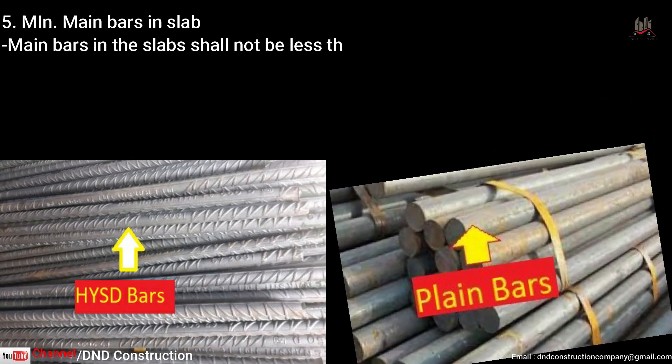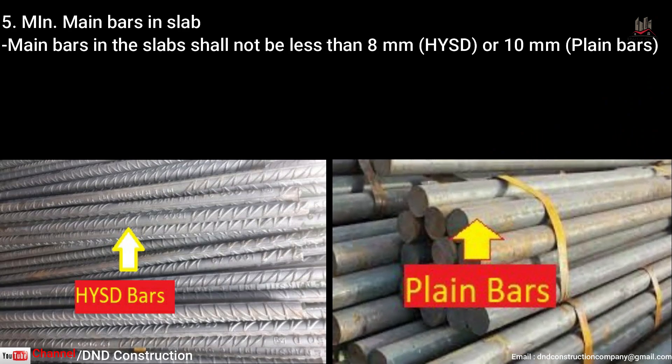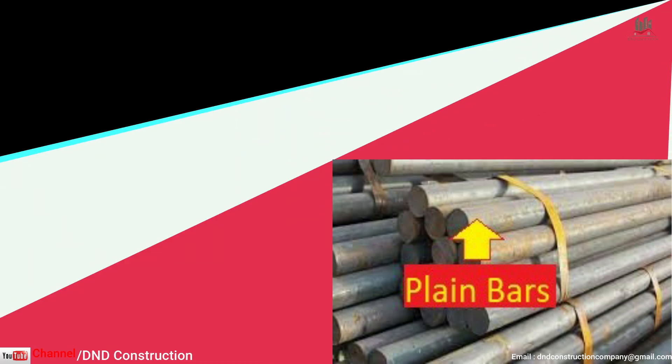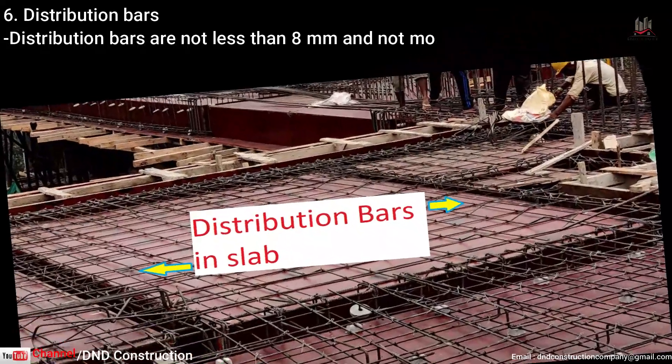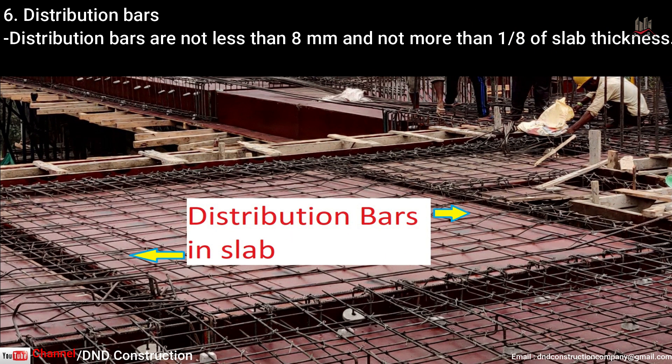Point five is minimum bar size used in a slab. If we are using high yield strength deformed bars (HYSD bars), the minimum size should be 8 mm. If we are using plain bars, it should be minimum 10 mm. Point six is distribution bars: distribution bars should not be less than 8 mm and should not be more than one-eighth of slab thickness, otherwise cover cannot be maintained.